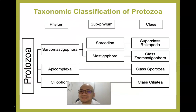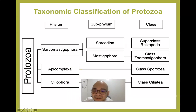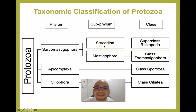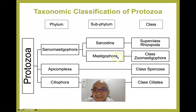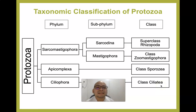If we look at the several phyla under the protozoans, we have phylum Sarcomastigophora, Apicomplexa, and Ciliophora. Sarcomastigophora has two subphyla: Sarcodina and Mastigophora. Sarcodina includes the Rhizopoda, commonly known as the amoeba. Under Mastigophora we have the flagellates, specifically the class Zoomastigophora. Under Apicomplexa we have Sporozoa, and under Ciliophora we have Ciliatea.